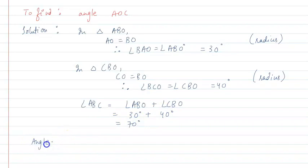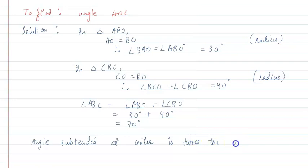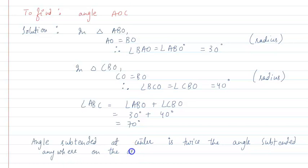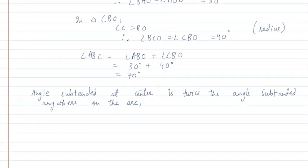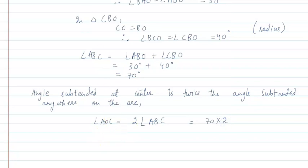By the basic property of circles, the angle subtended at the center is twice the angle subtended anywhere on the arc. Therefore angle AOC equals two times angle ABC. Since angle ABC is 70 degrees, angle AOC equals 70 multiplied by 2, which equals 140 degrees. This is the final answer.